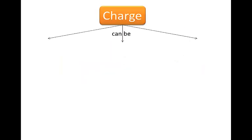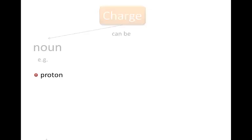Now even in science, we use the word charge in different ways, which can be confusing. So let's look at these different ways. Charge can be a noun, meaning an object, a particle. For example, a proton is a positive charge. An electron is a negative charge.